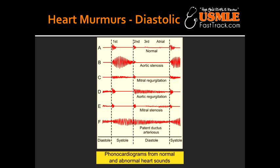Describe the murmur caused by aortic regurgitation. Aortic regurgitation can cause an immediate high-pitched blowing diastolic decrescendo murmur, which has a wide pulse pressure when chronic. Patients with this condition can present with bounding pulses and head bobbing.